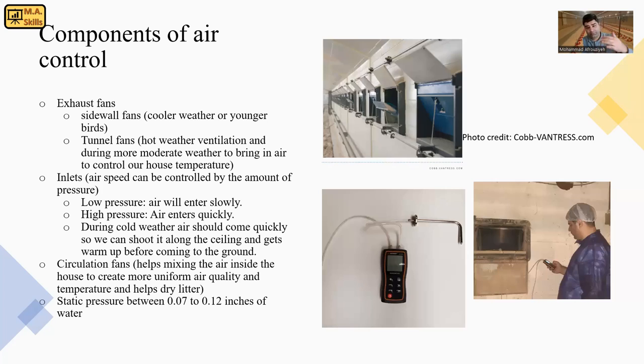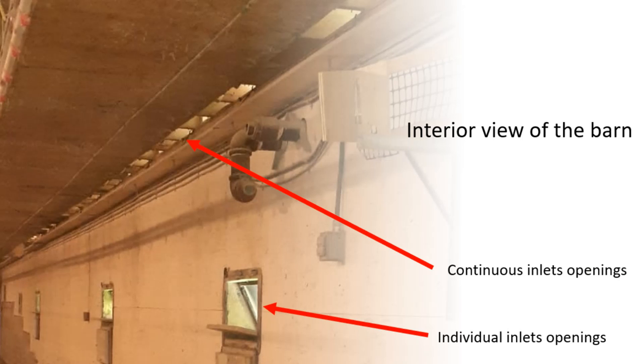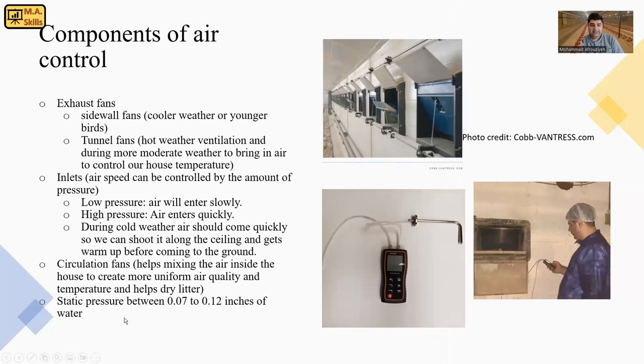Inside a cross ventilation system, we can have continuous inlets, as Tara showed in her video, and also individual inlets. For example, for older birds after the brooding phase and during summer time, we can use individual inlets. As a guideline, static pressure should be between 0.07 to 0.12 inches of water when measuring by manometer.